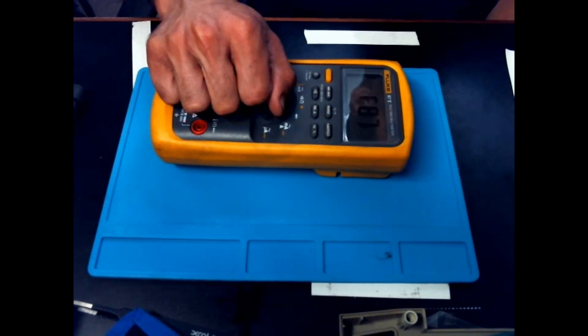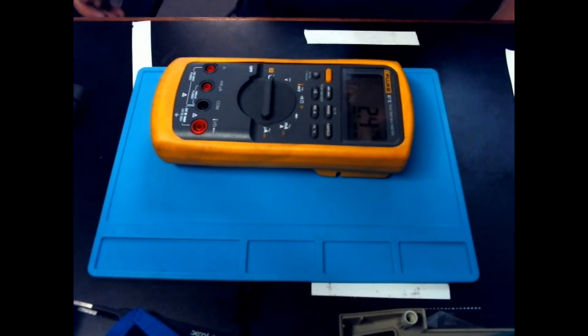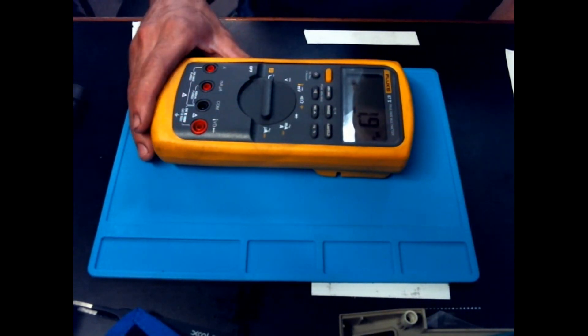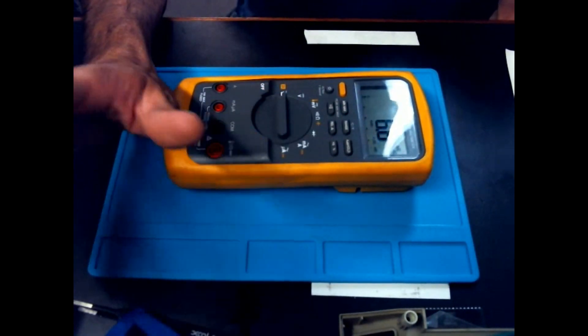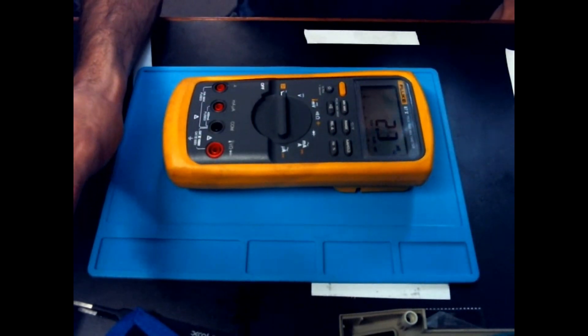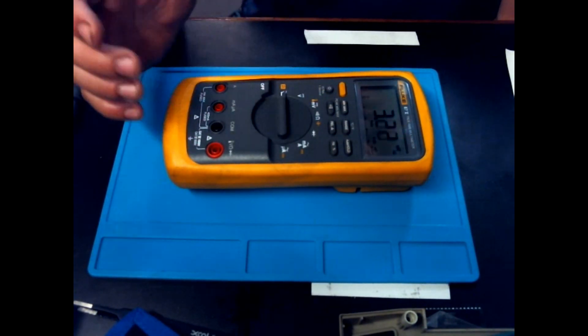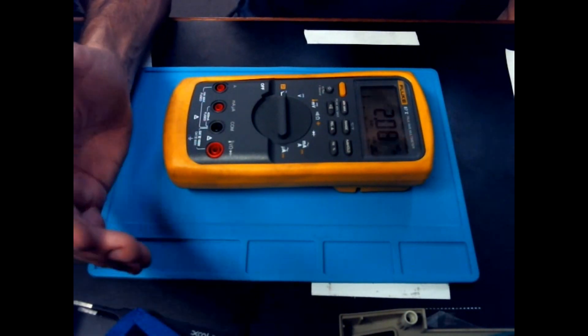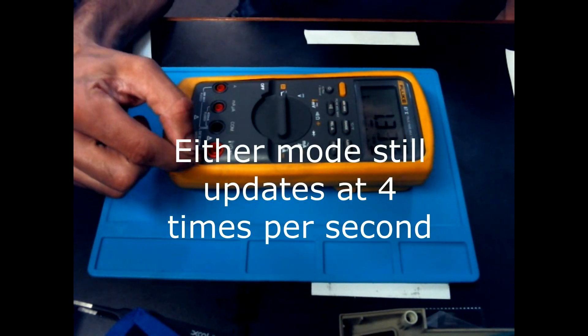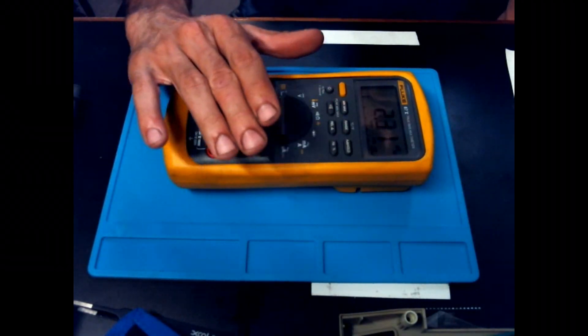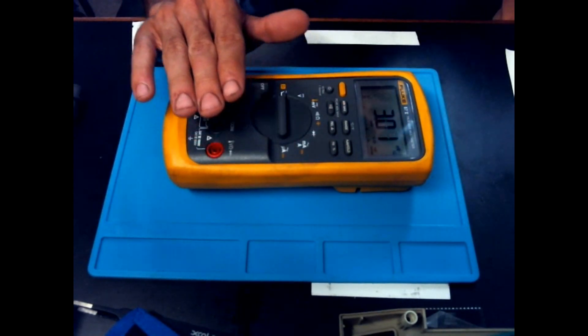As for the display, this is where we start getting into why I really like this meter. It's a normal 6,000 count display, which is a little bit above average of, you know, just most meters. You find a lot of 2,000 and 4,000 counts out there. So, 6,000 is a little bit better, but it also comes with this high res mode. That turns it into a 20,000 counts meter. And, it also, if I'm not mistaken, it does bring up your update speed, too, a little bit more. But, that's a really, really handy feature to have, is to be able to use this as a 4.5 digit meter.